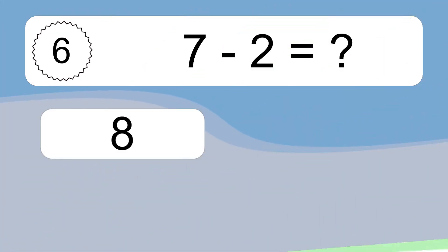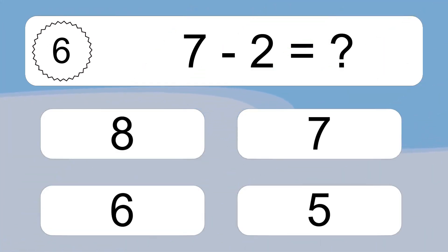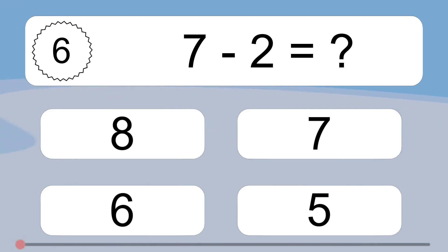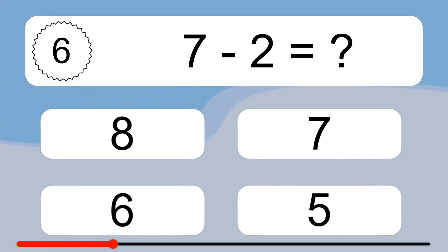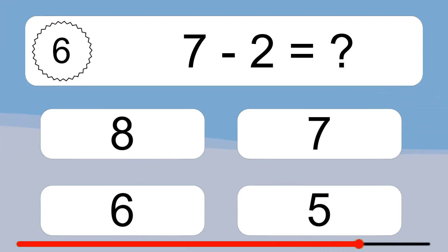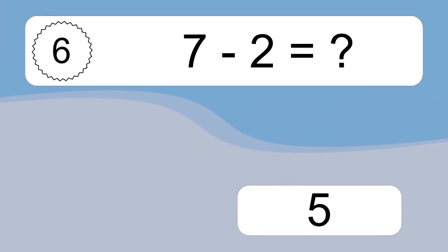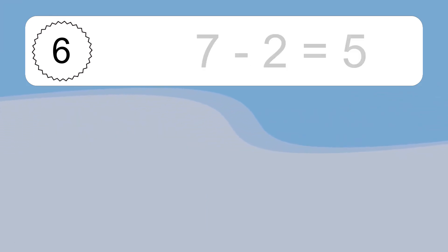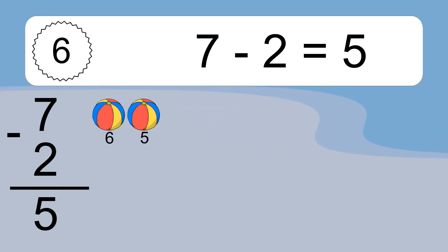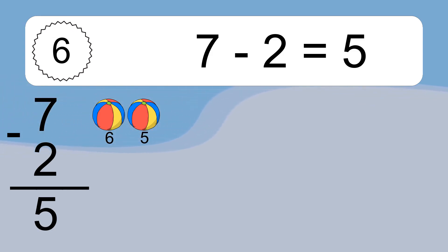7 minus 2 equals what? 7 minus 2 equals 5. Let's count it: 6, 5.